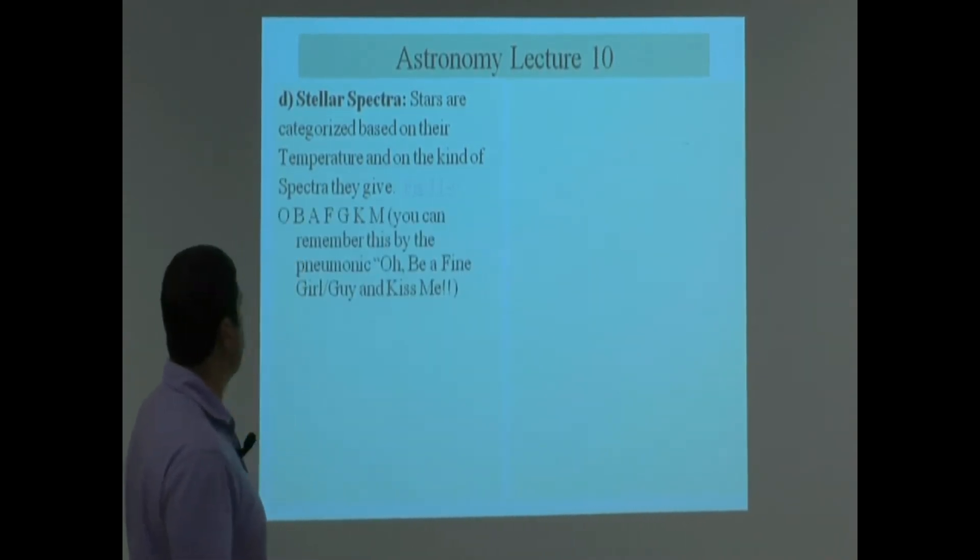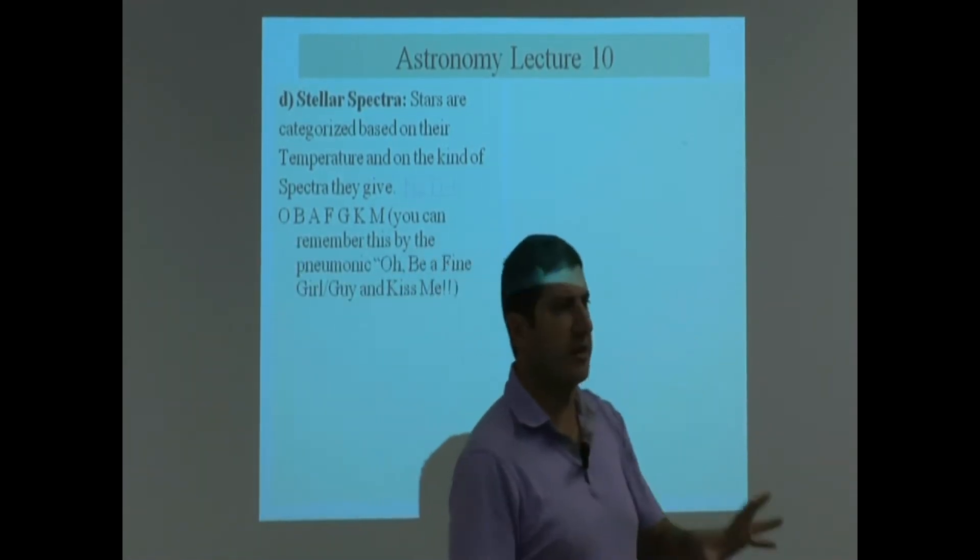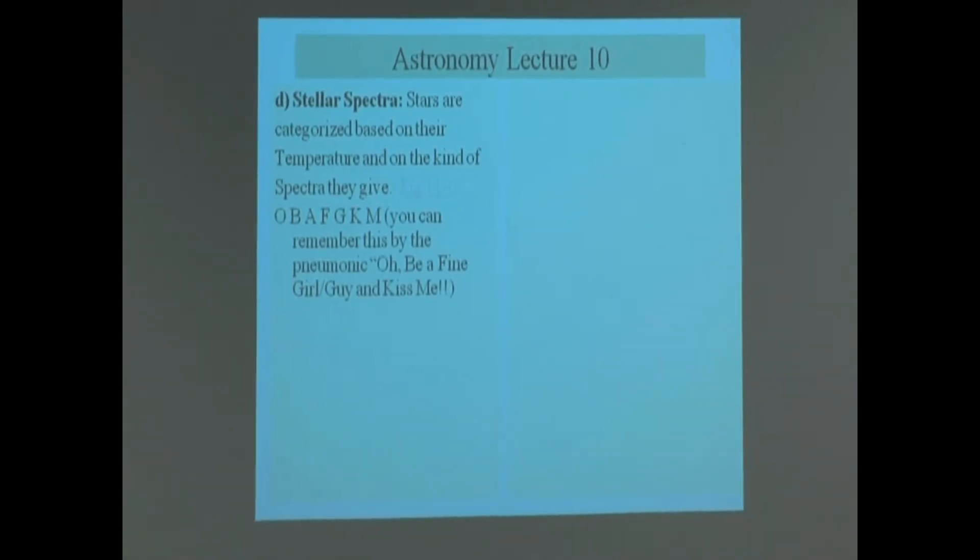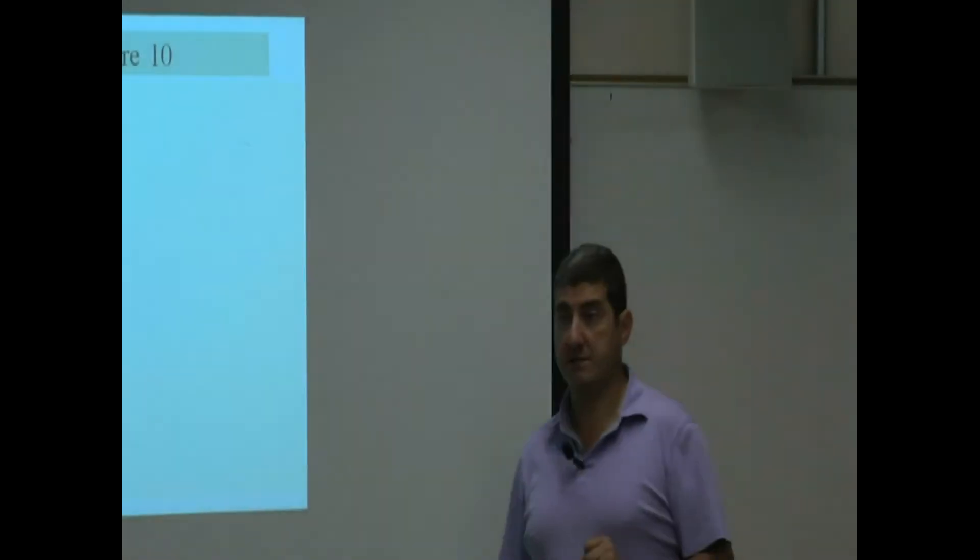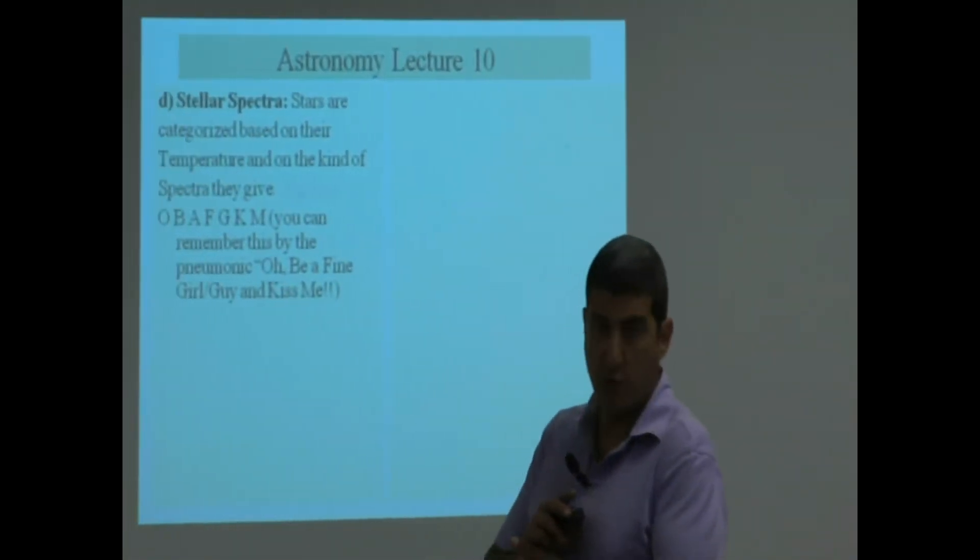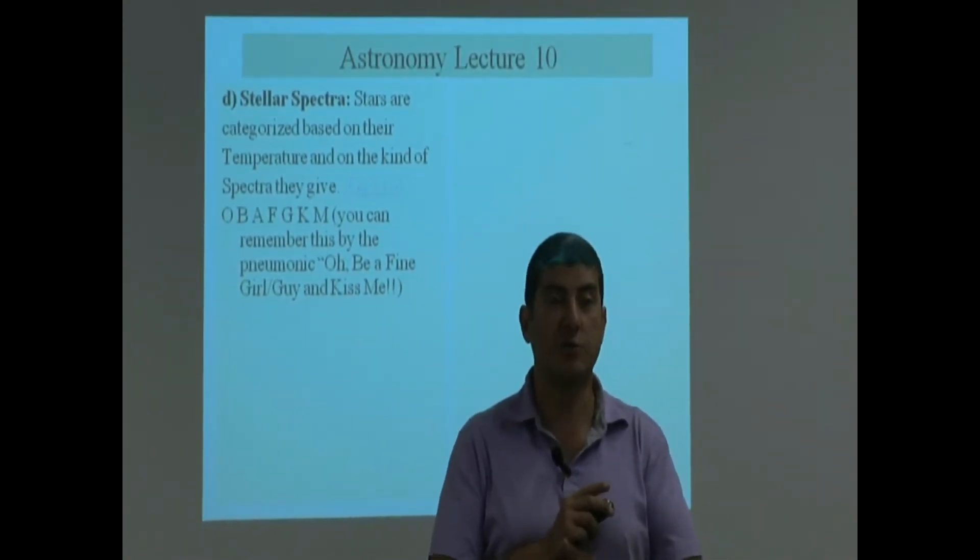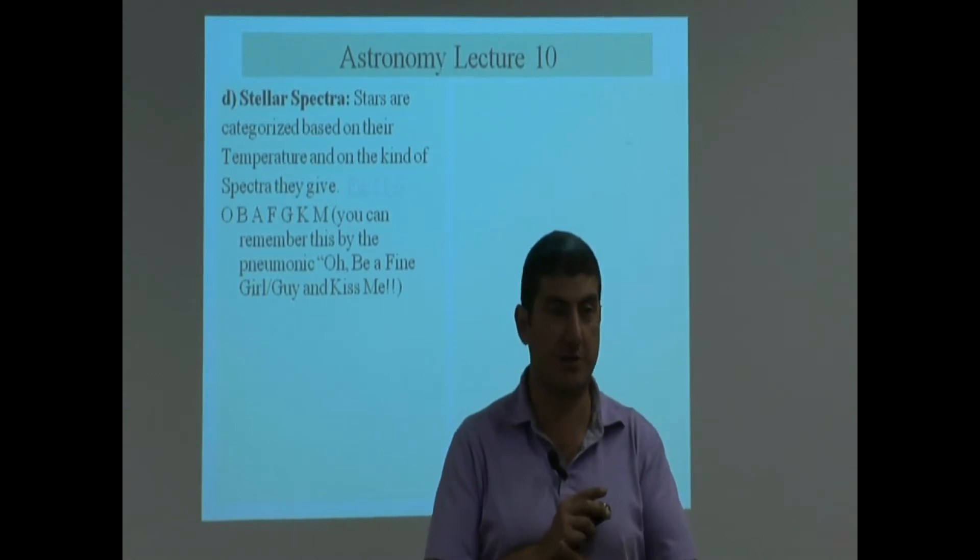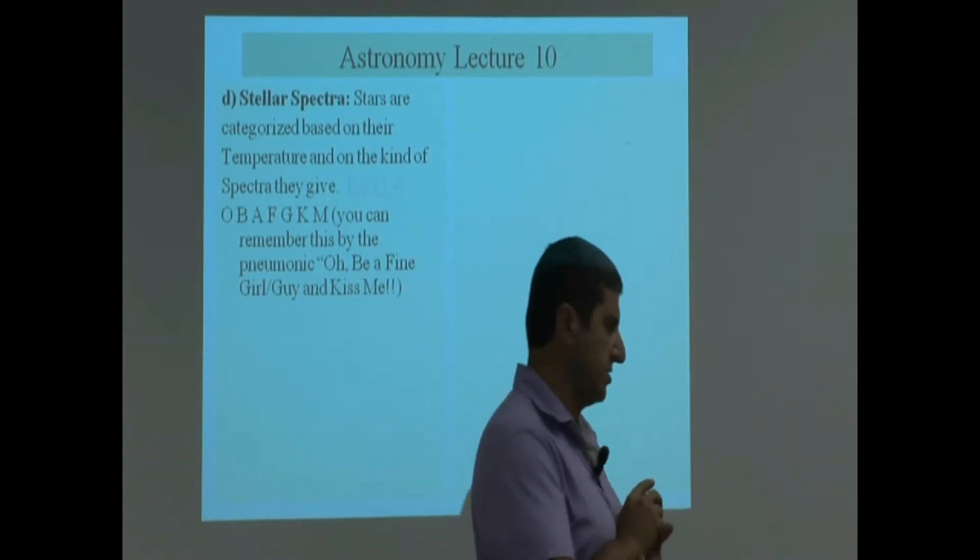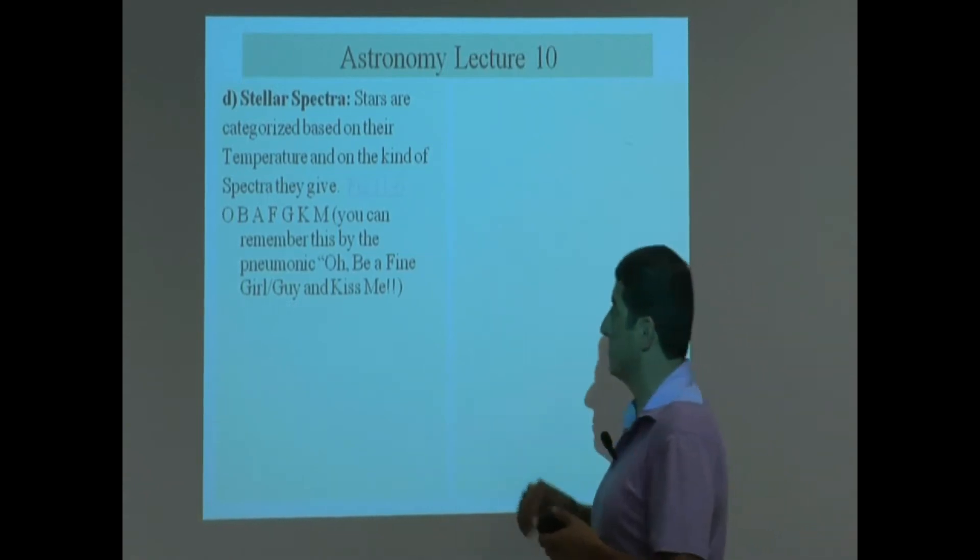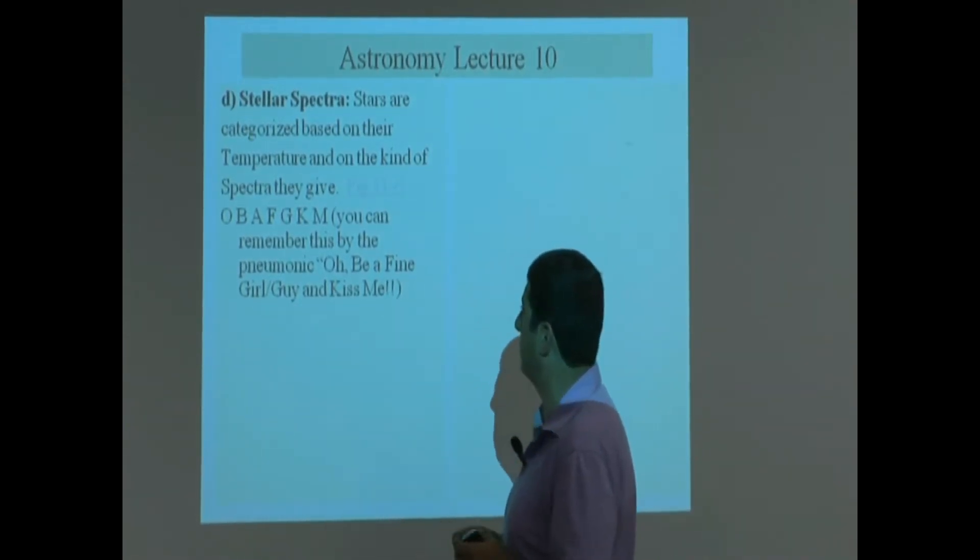O, B, A, F, G, K, M. This whole stellar spectra classification, the person who kind of came up with this was Annie Jump Cannon, famous woman astronomer, one of the early pioneers of stellar spectra classification. She had teams of women astronomers working with her at Harvard University. She got her PhD there. She worked there for many years and she came up with this classification together working with other people in collaboration.